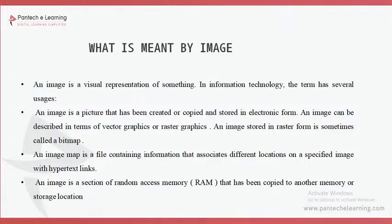Going deeper into images, there are two different parts: analog images and digital images. We are processing the digital images — images digitally formed and processed by computers. In digital format, there are also two different categories: vector and raster.